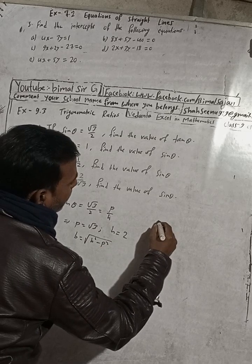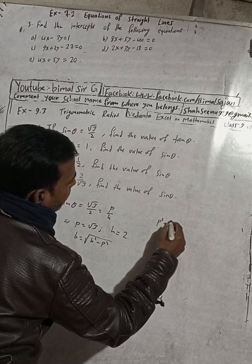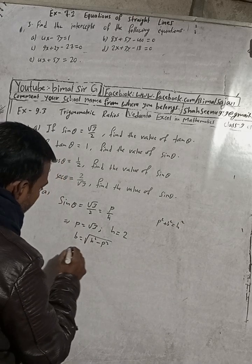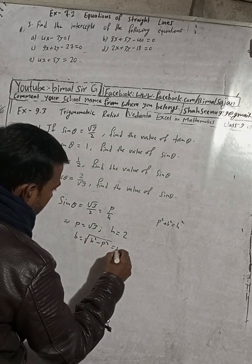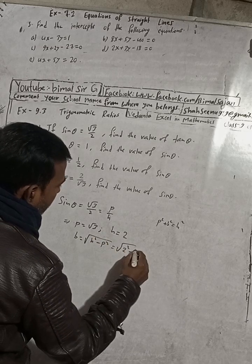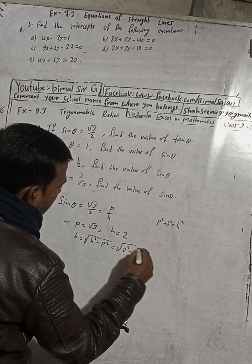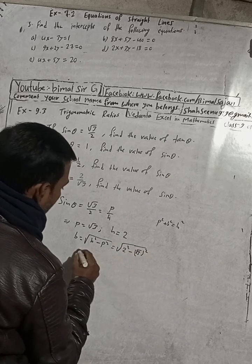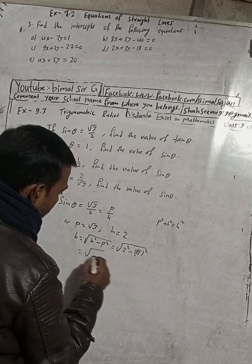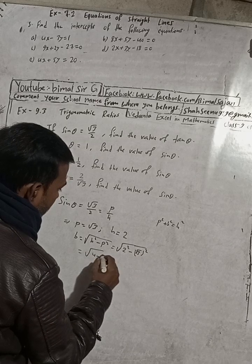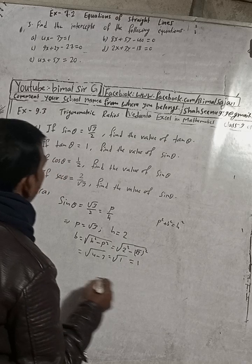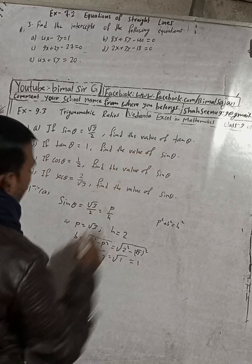Remember the formula: P squared plus B squared is equal to H squared. From here, B is equal to root under H squared minus P squared, which is root under 2 squared minus (√3) squared. That is root under 4 minus 3, which equals root of 1, so B is equal to 1.